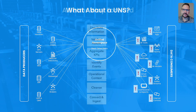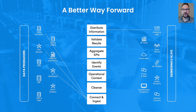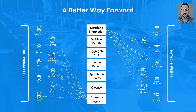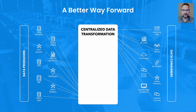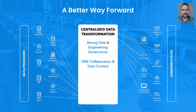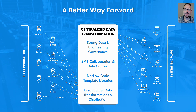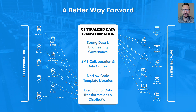But there is a better way forward. We can centralize this process by connecting all of our producers to a model that will allow us to define how we treat our data and then distribute those results to all of our applications. Essentially, we're looking to centralize our data transformation instead of shifting it over to the application or consumer layer. By centralizing the data transformations, we pick up strong engineering and data governance, a place for subject matter experts from both IT and OT to collaborate, a no-code, low-code templatized library of work that can be reused from project to project, and the ability to execute data transformations early in our data stream. Pre-processing data before it arrives at a data lake or in the cloud saves us a lot of money and time.